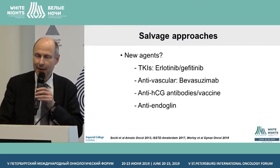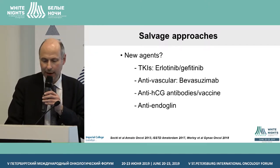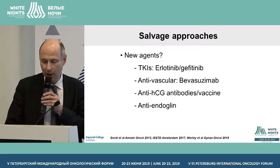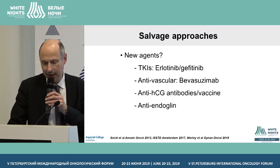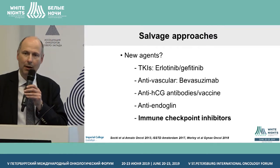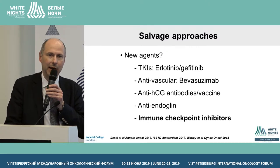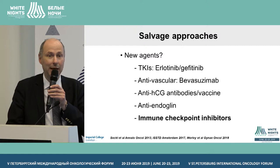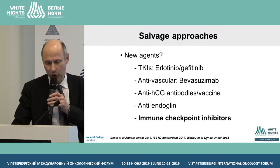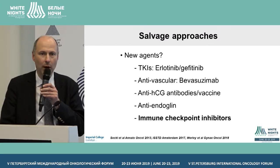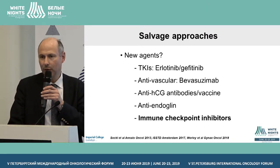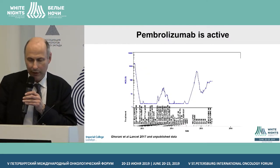There are other vascular markers on these tumours including endoglin, and there is an anti-endoglin antibody available. That has been tried in combination with bevacizumab in six patients - one responded and is in remission, with the case report published in Gynaecologic Oncology in 2018. These tumours are derived from trophoblast. Trophoblast evades the immune system - if it didn't, none of us would be here today. One mechanism by which trophoblast evades the immune system is expression of PD-L1, programme death ligand 1.